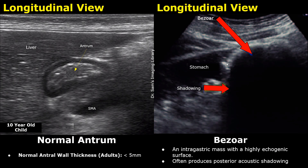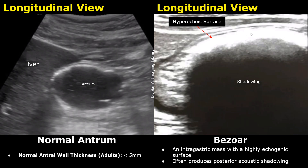A bezoar refers to indigestible material such as hair and plant fibers that can cause obstruction in the gastrointestinal tract. Here is a case of a gastric bezoar in a pediatric patient. On ultrasound, a bezoar can appear as an intragastric mass with a hyperechoic surface which often produces clean posterior acoustic shadowing — you see a hyperechoic arc with black posterior shadowing. Here is another case: the stomach is filled with a hyperechoic shadowing structure with a hyperechoic surface and a dark shadow.